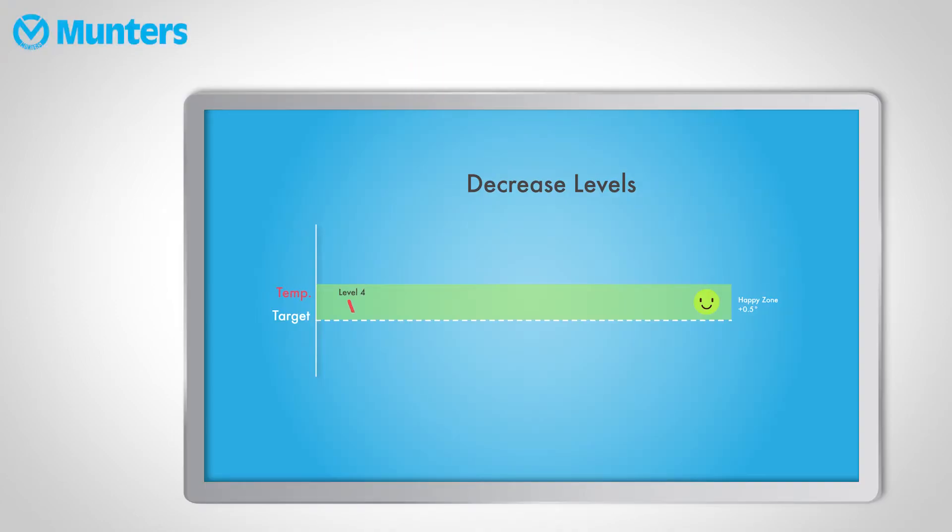The decreased level delay will determine the amount of time the controller will wait before decreasing ventilation when the temperature goes below target. The default for this parameter is 60 seconds and was also designed in order to protect young animals. As the animals grow older, this parameter should be a bit longer. We recommend setting it to 90 seconds throughout the growth period. You should never go below 30 or 40 seconds because that is just too short for any temperature to stabilize in the house and will result in excessive level movement.